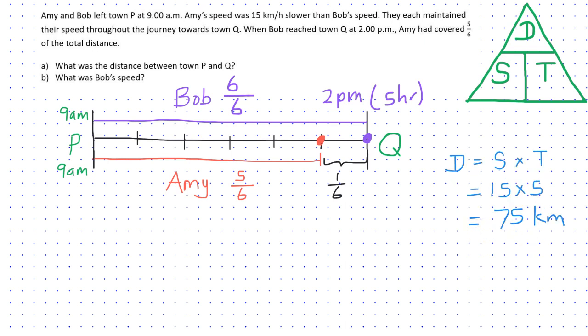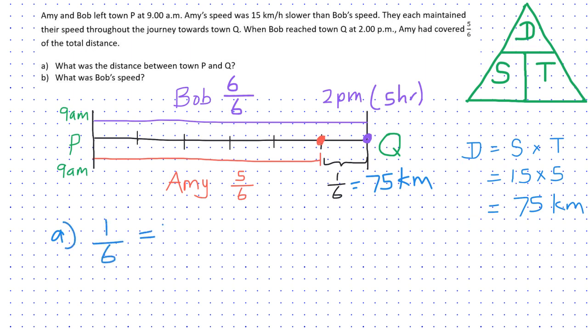So 1 sixth of the total distance is equal to 75 km. Therefore the total distance will be 75 into 6. Therefore the total distance from town P to Q would be 450 km.